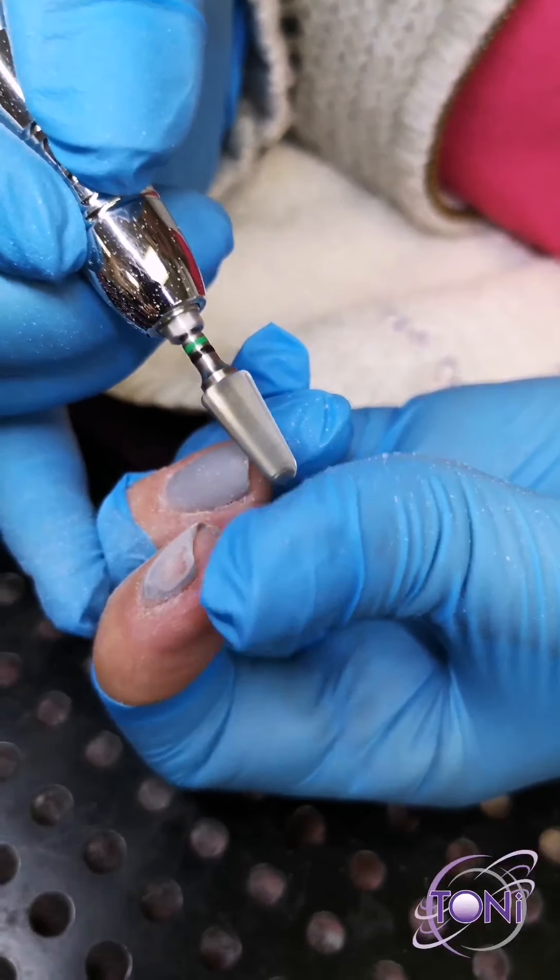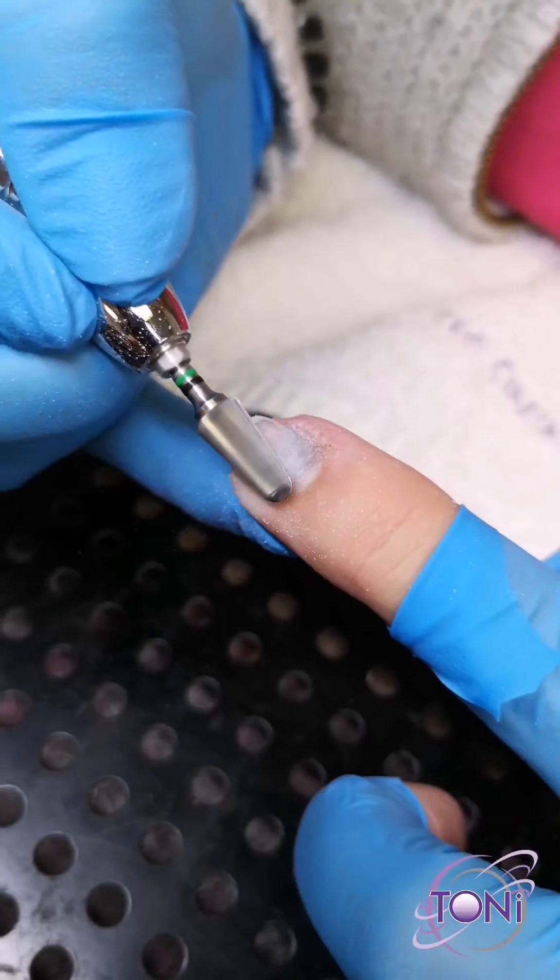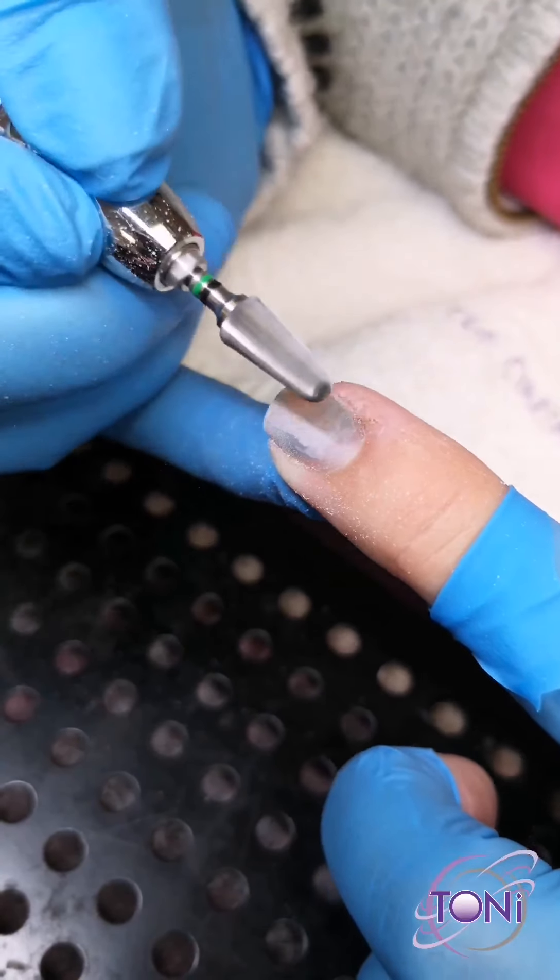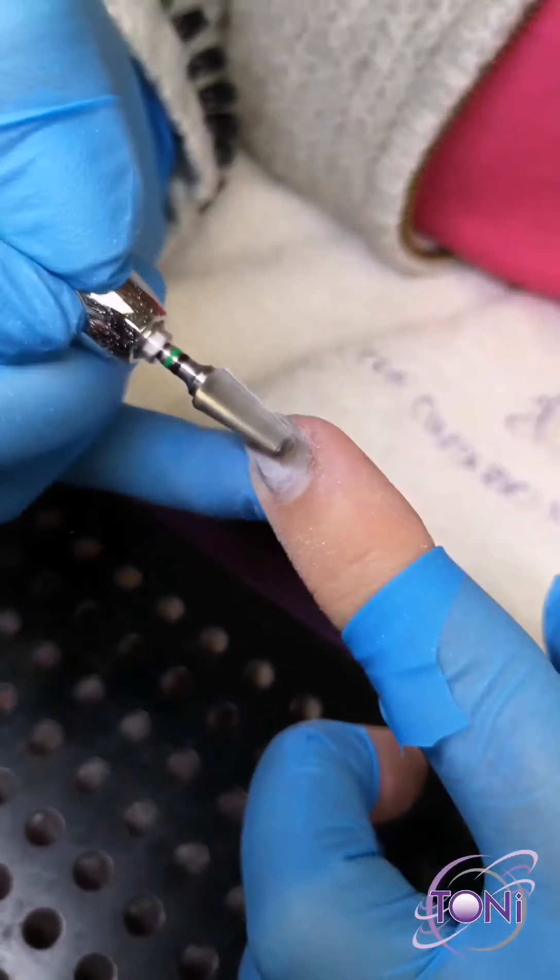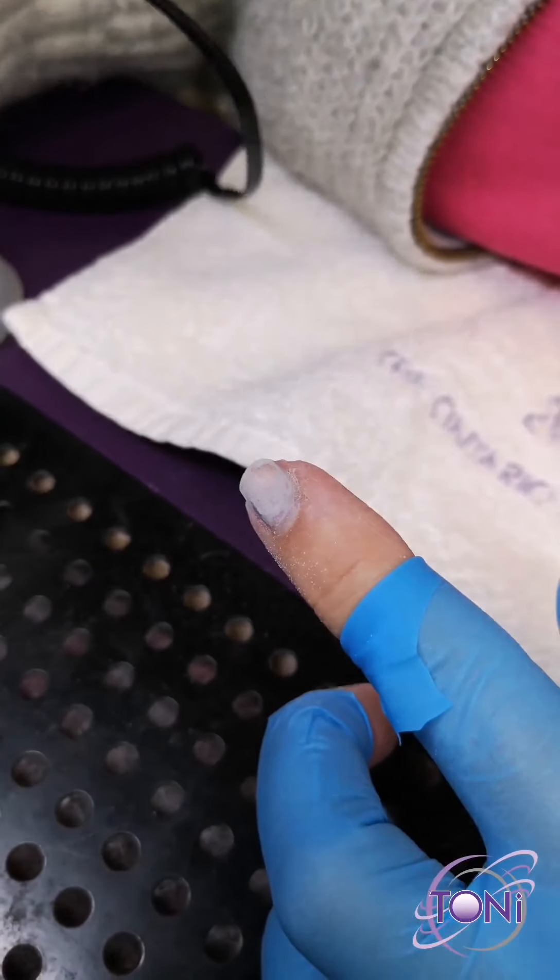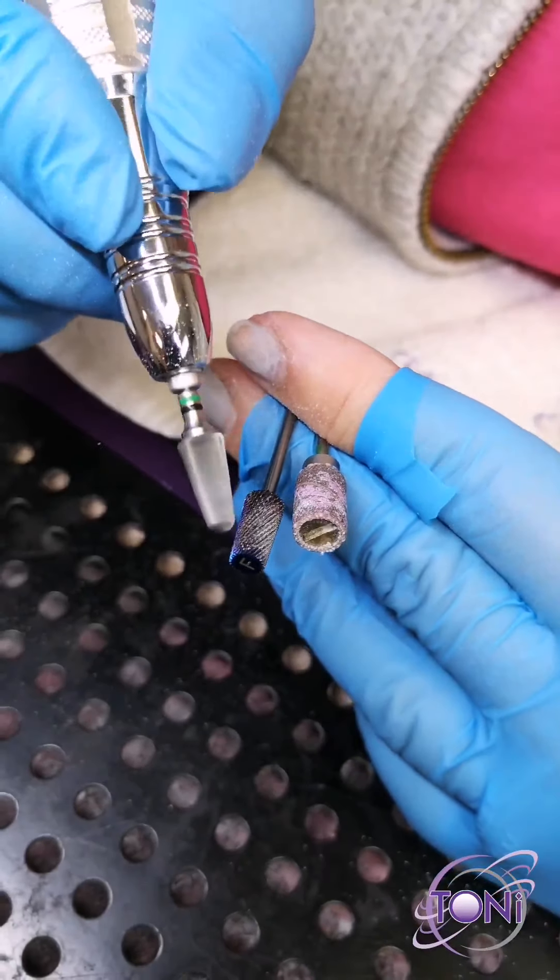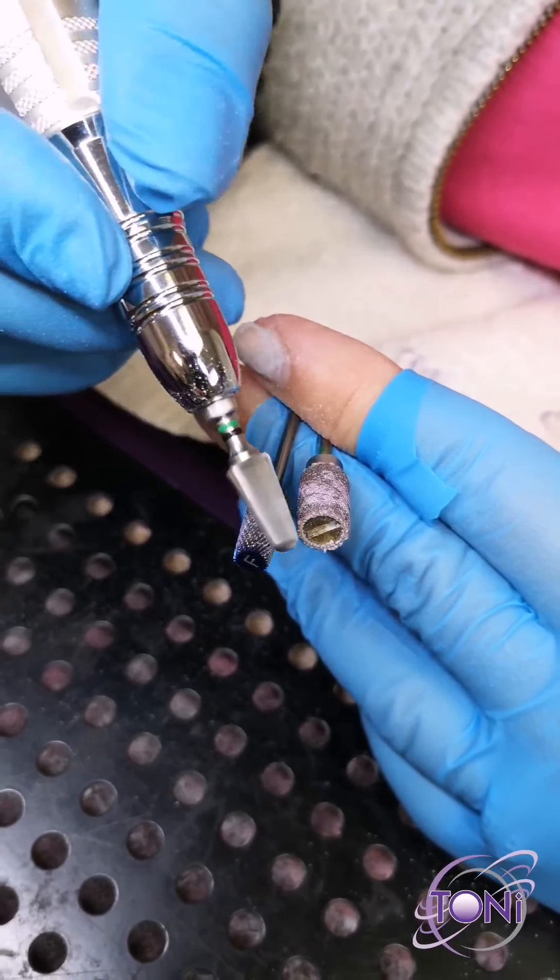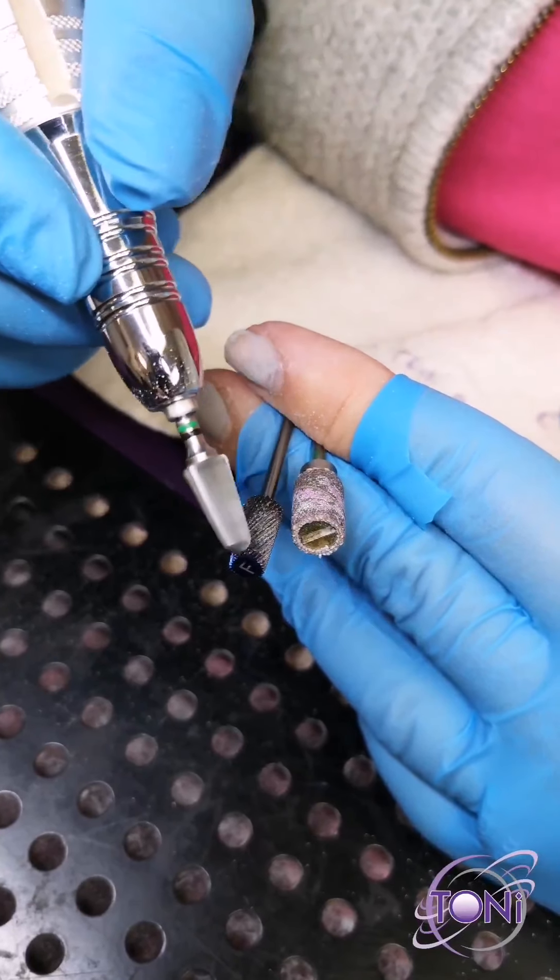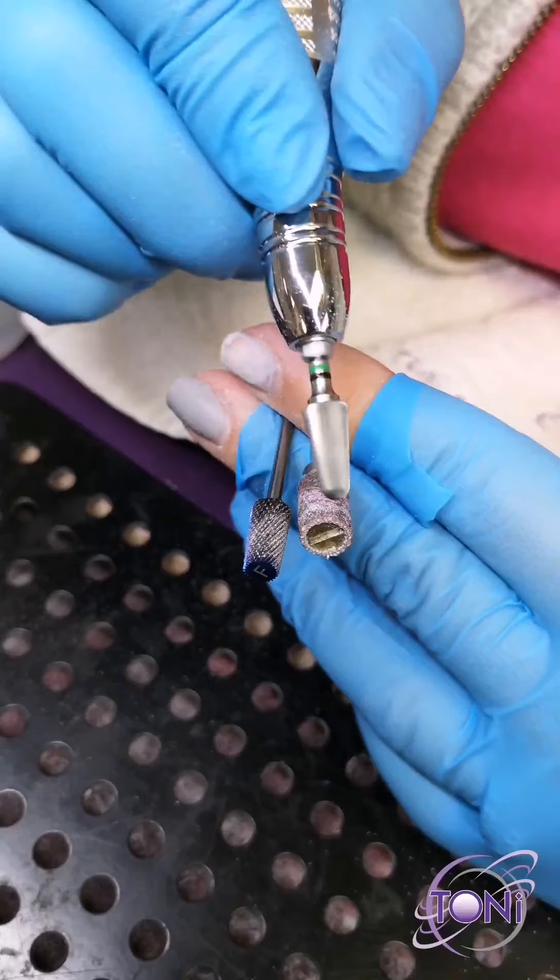The other thing I like about this is it's cuticle safe. It's got a nice rounded edge. When you're working, you can go right up along that edge. When I'm using anything that is a straight edge bit or a barrel shape like these two, technically they're barrel bits. This one's a bit of a tapered barrel. You have this straight edge here.